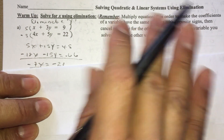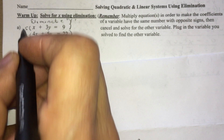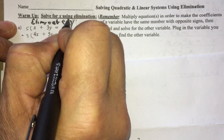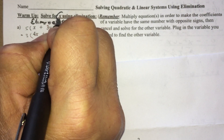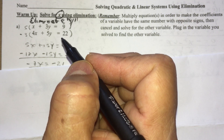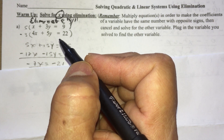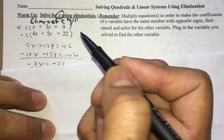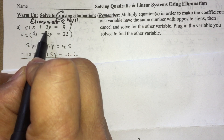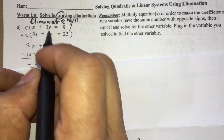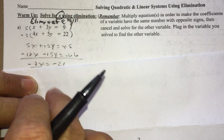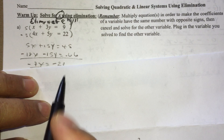I'm being very specific — solve for X. Even though it's easier to eliminate the X's here, your best shot is to eliminate the Y's, because if you're looking for X, you're better off eliminating Y's so your answer is already X. Remember, these are the two original equations: X + 3Y = 9 and 4X + 5Y = 22. They have to be in standard form.